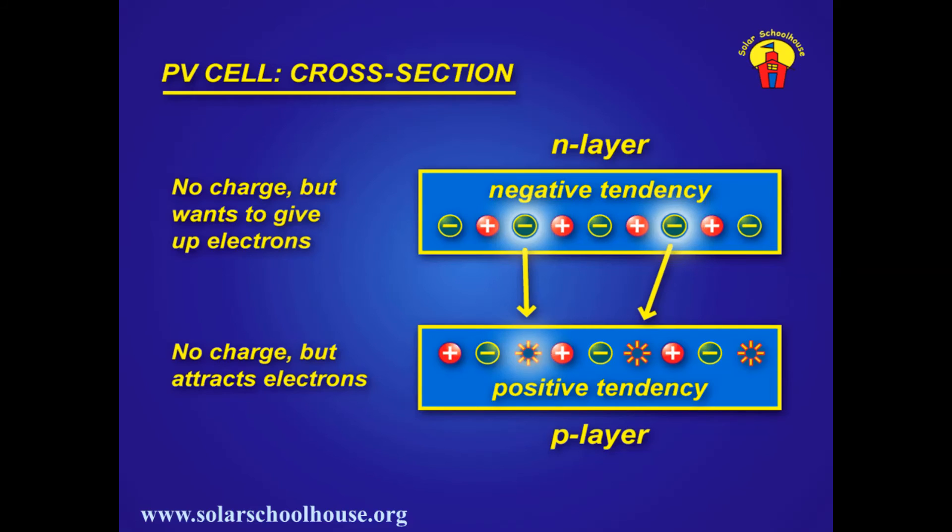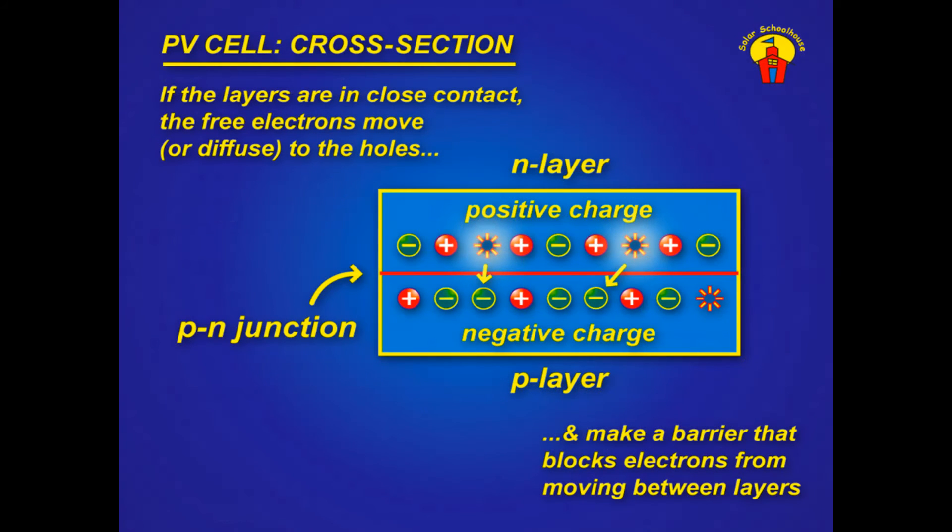If the layers are in contact, the free electrons in the N layer move to the holes in the P layer through a process called diffusion. This makes a barrier that blocks electrons from moving between layers, and establishes a positive and negative charge across the PN junction.